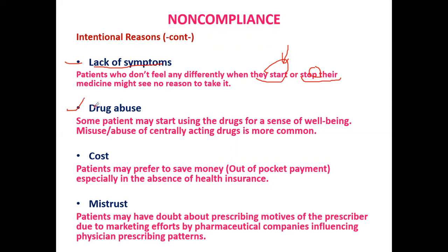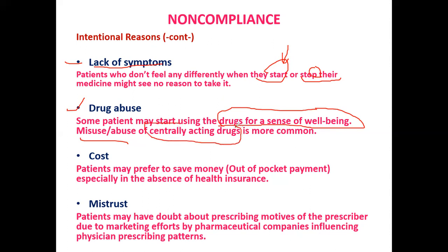Another reason is drug abuse — the patient starts using the drug for a sense of wellbeing. This may lead to abuse or misuse of the drug. A general example is centrally acting drugs — for instance, morphine, used by IV drug abusers for a sense of wellbeing. This is also one of the reasons for non-compliance.